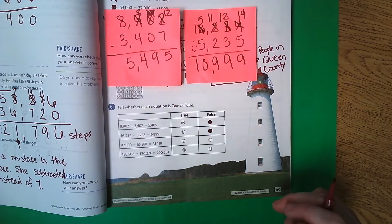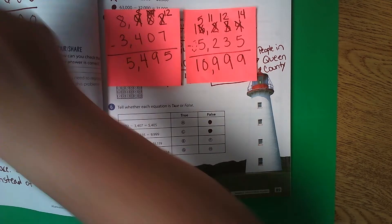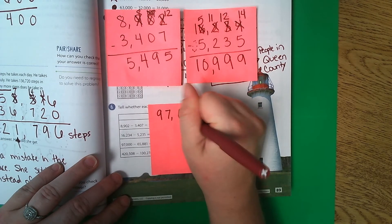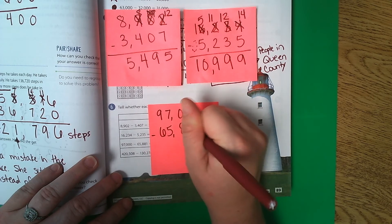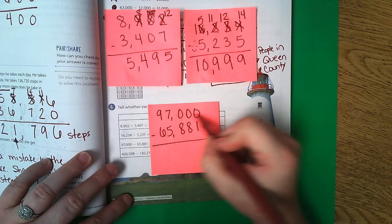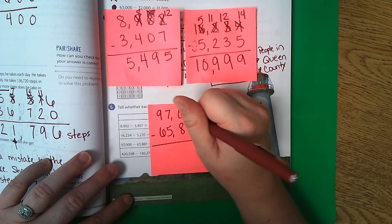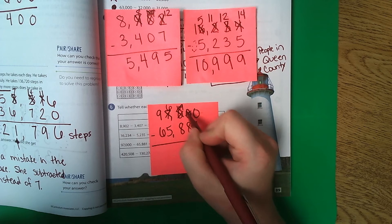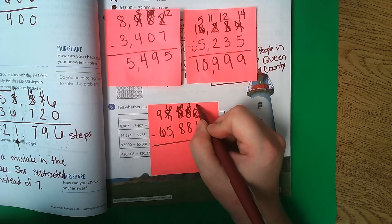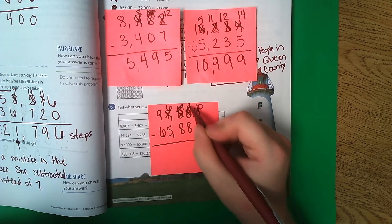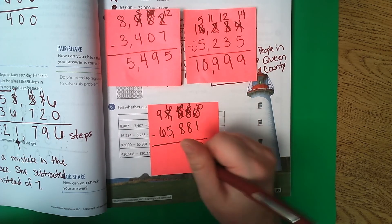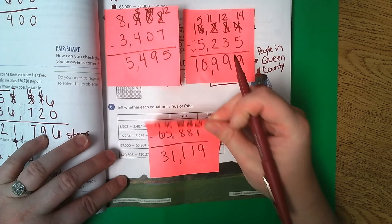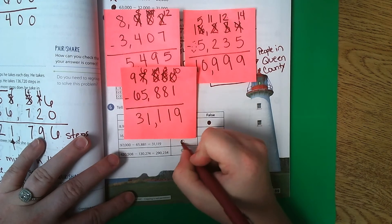Next one. 97,000 subtract 65,881. This one is going to be a little bit tricky. 0 minus 1. Can't go here. Can't go here. Have to go all the way to the thousands. It becomes a 6. 10, but it becomes a 9. 10 becomes a 9, and the 0 becomes a 10. So 10 minus 1 is 9. 9 minus 8 is 1. 9 minus 8 is 1. 6 minus 5 is 1. And 9 minus 6 is 3. So 31,119. Does it match? Yes, it does. So that one is true.